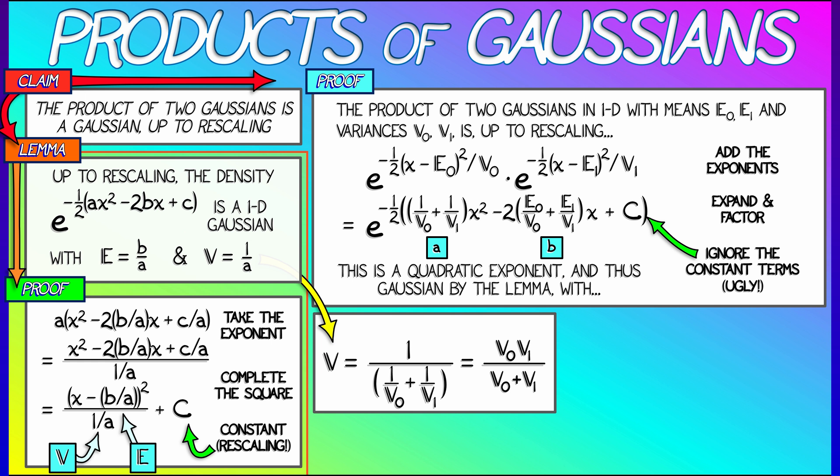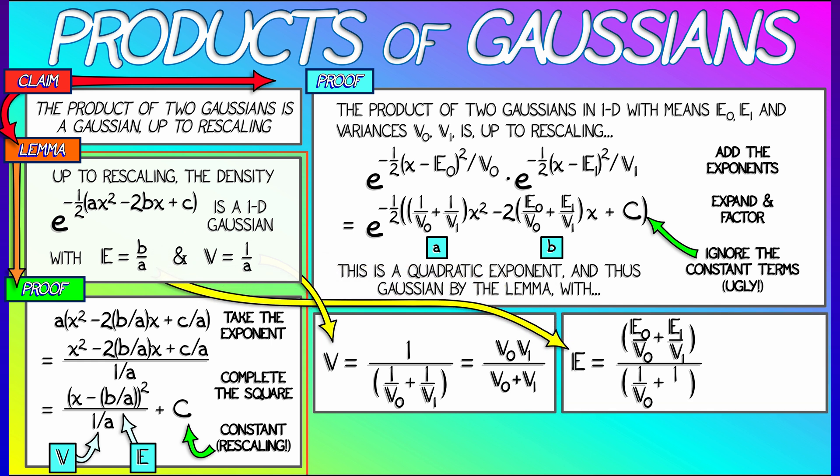What is the mean? The new expectation is e0 over v0 plus e1 over v1, all of that divided by 1 over v0 plus 1 over v1. Putting that again over a common denominator, we get v1 e0 plus v0 e1 divided by v0 plus v1.